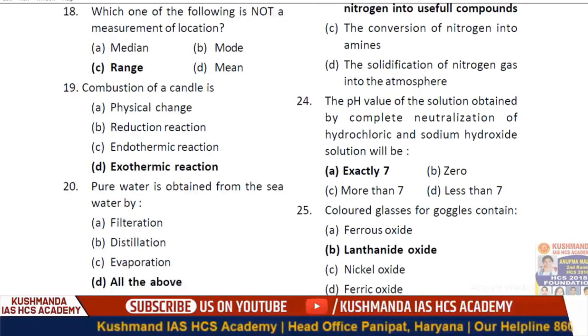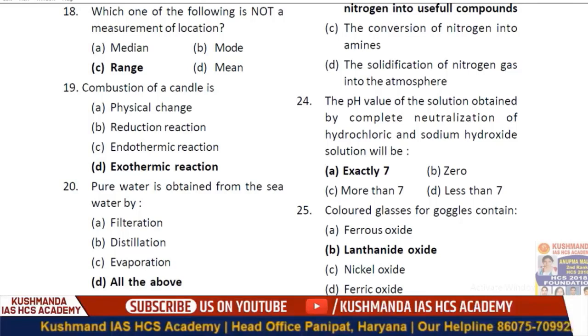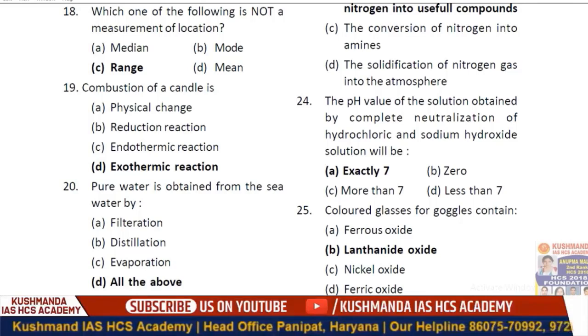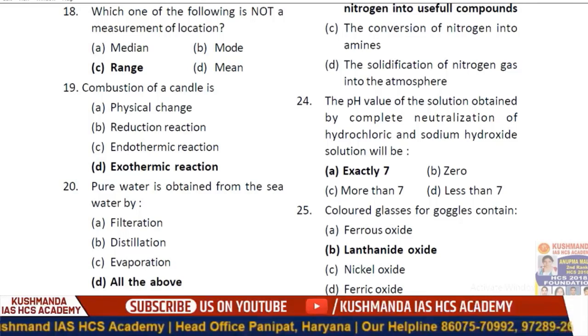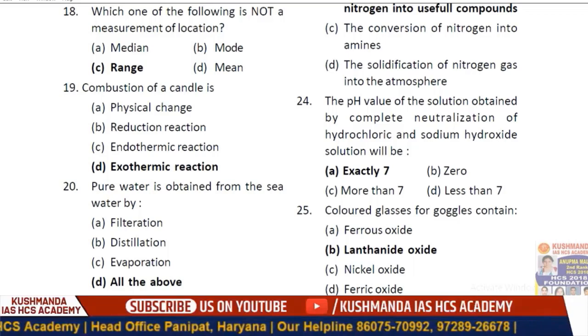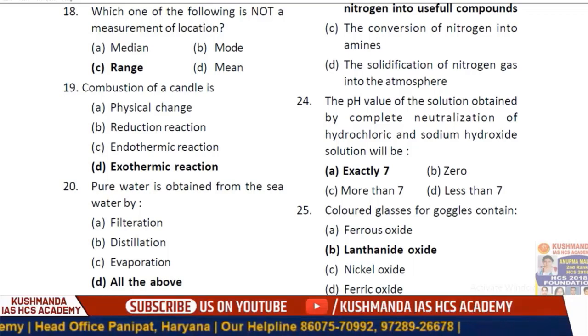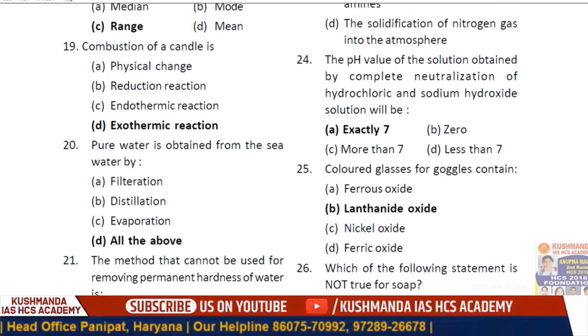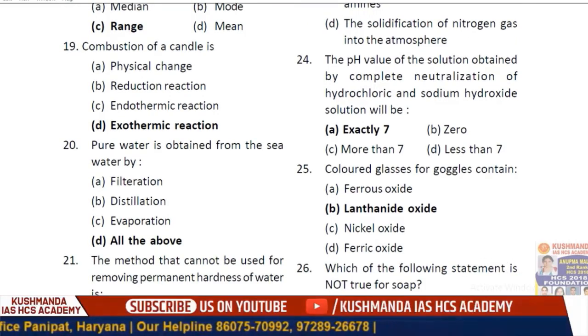Question 24: The pH value of a solution obtained by complete neutralization of hydrochloric acid and sodium hydroxide solution will be — option A — exactly 7.